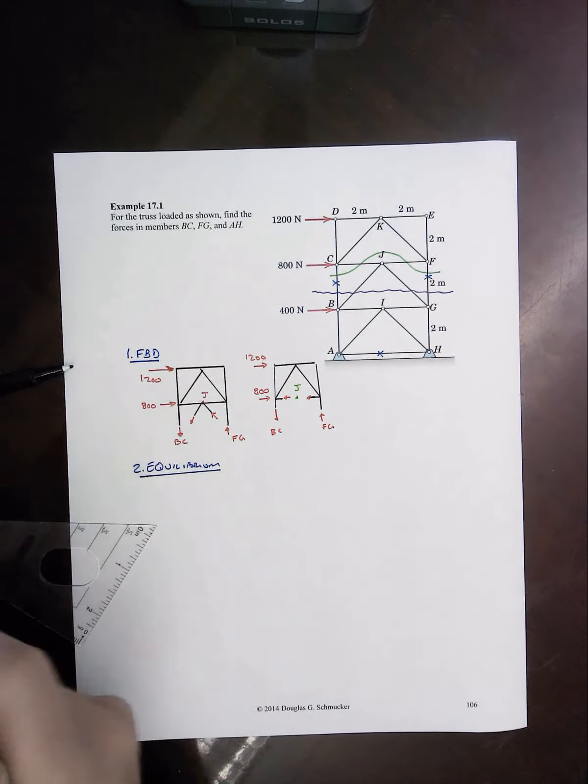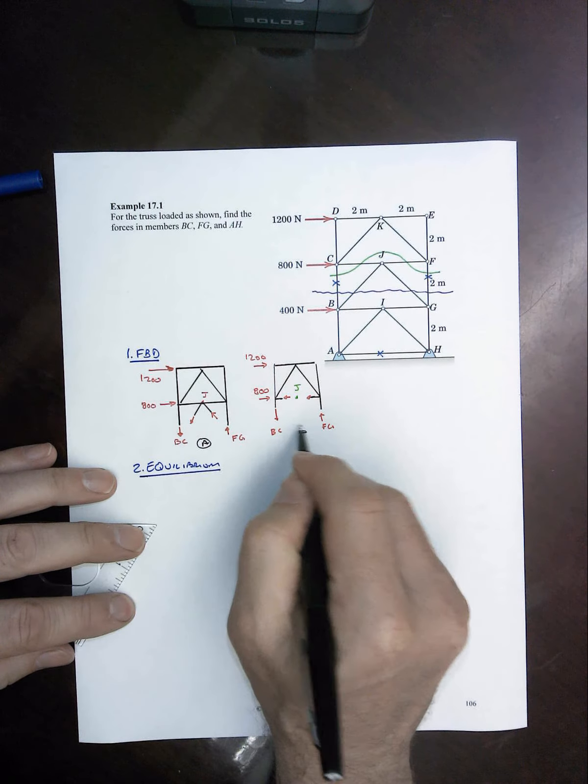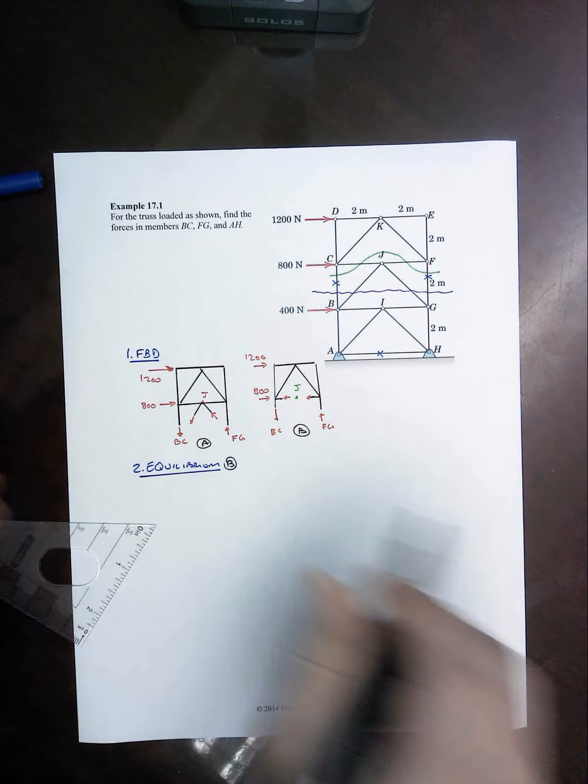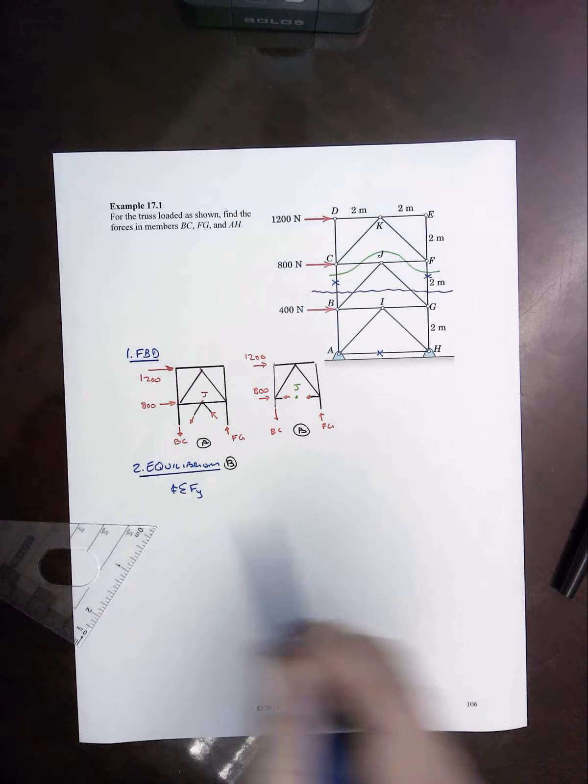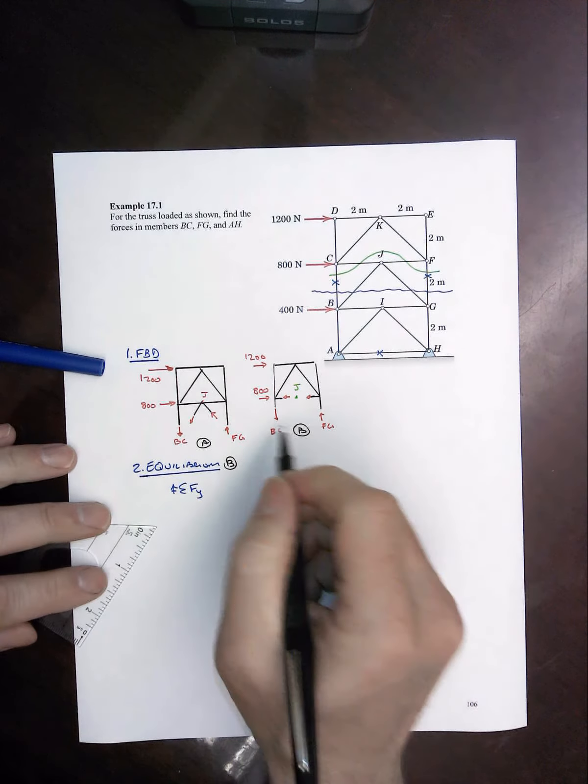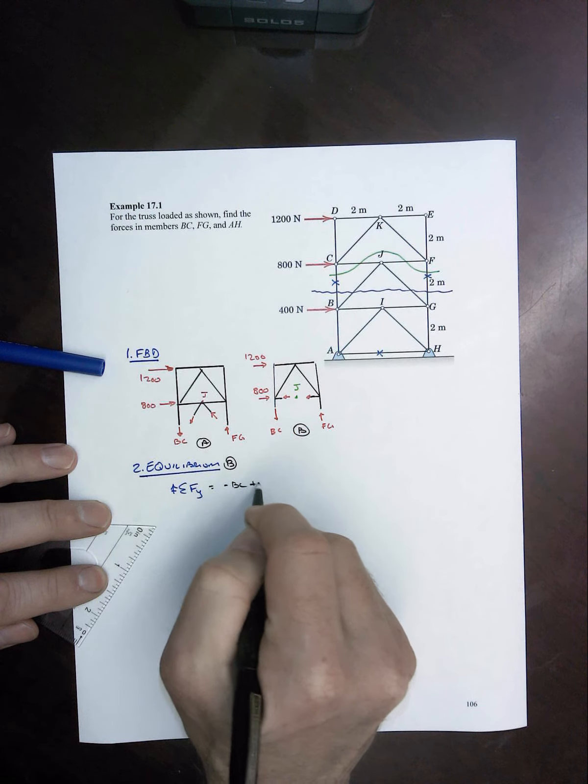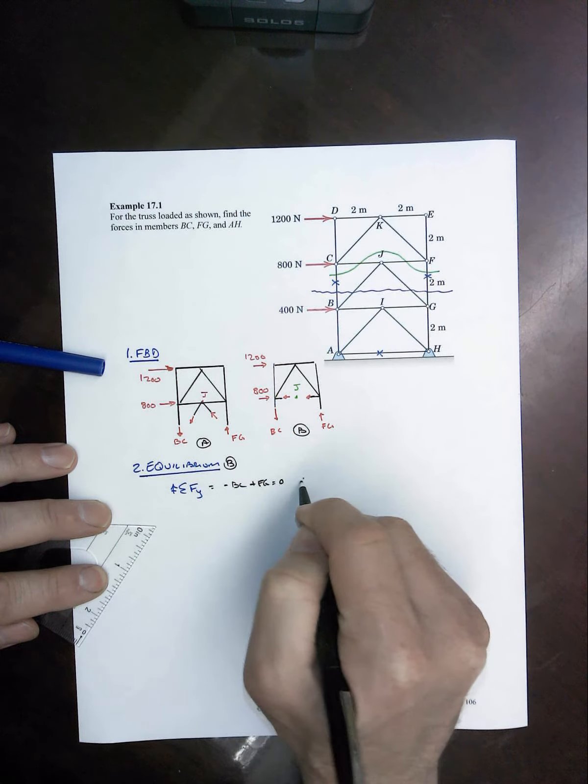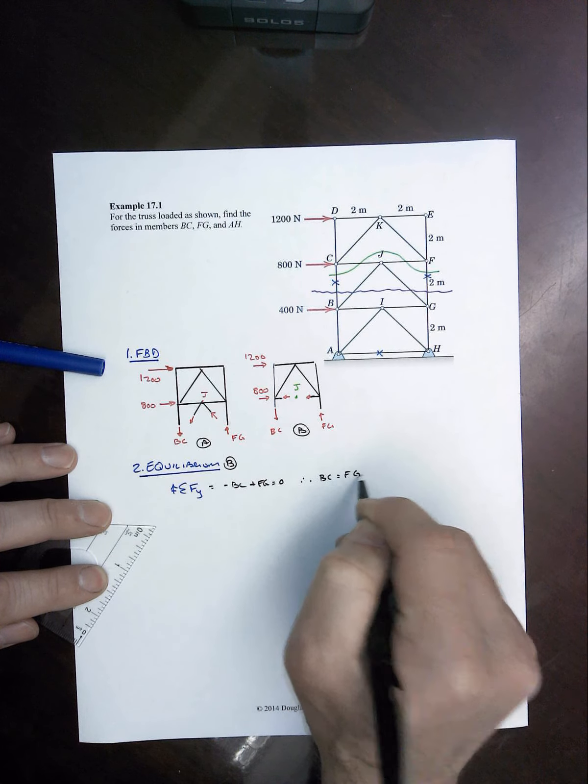If we take the obvious part, which is for this free-body diagram, let's call this A and B. That if we sum forces in the Y, then we only have BC and FG in it. And that tells us that the two are equal, although in opposite direction, one's compression, one's in tension.